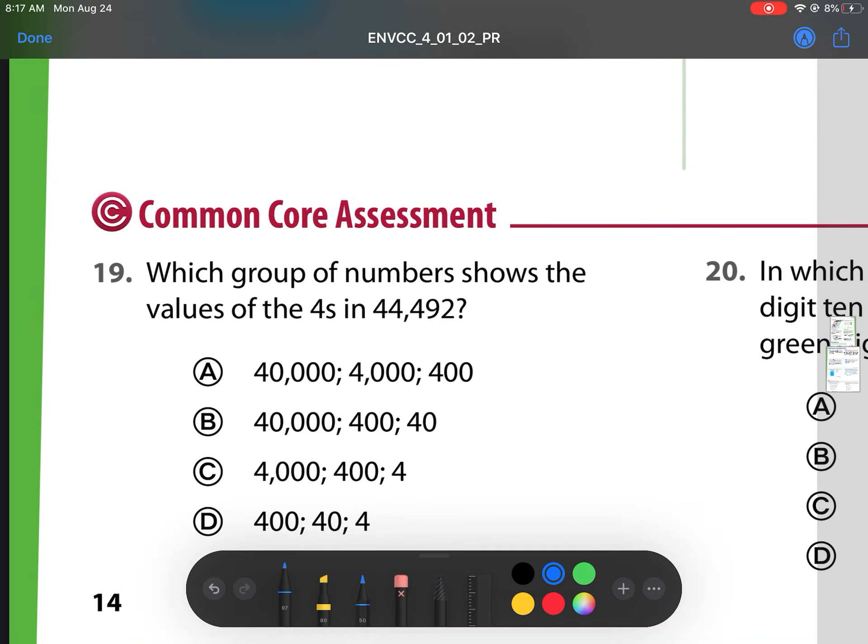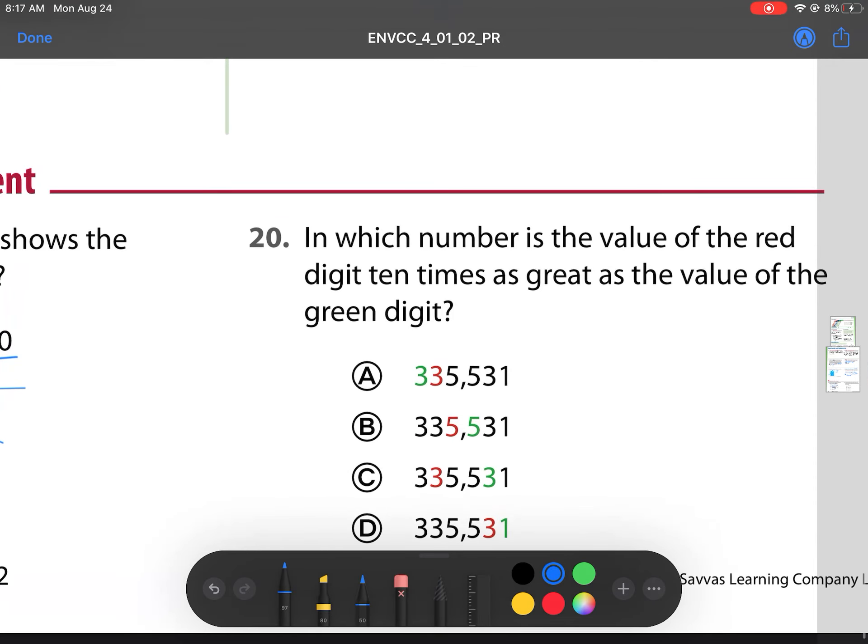Next, number 19. Which group of numbers shows the value of fours in 44,492? Well, we have a four in the 40,000. So, this one is good and this one is good. We have a four in the 1,000 spot, which none of these have except A. Let's check. This should also be a 400, which I see there. So, our answer is A. For number 20, in which number is the value of the red digit 10 times as great as the value of the green digit? So, red is 10 times as great as green. So, red needs to come first, which I see here, here, and here. And it needs to be the same digit because 1 times 10 does not equal 30, so it can't be this one. So, my answer is B. All right, guys.